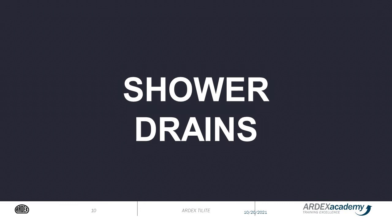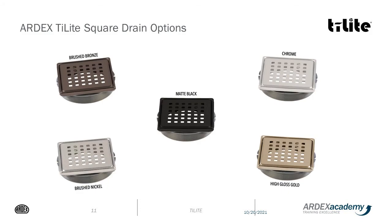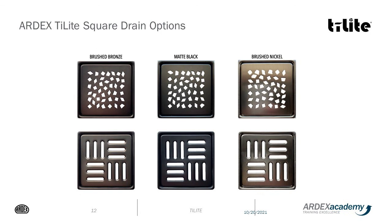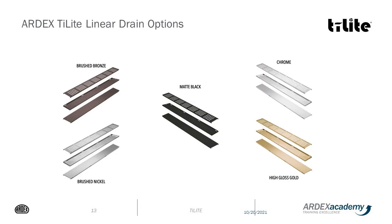TileLite square drains come in matte black, brushed bronze, chrome, high-gloss gold, and brushed nickel. Besides the basic square punch-out option, there are two more design options for the drains. The TileLite linear drains come in the same five finishes but with three different selections: you can have the standard drain grate with punched holes, a tileable grate — which is becoming very popular today — or a standard metal grate cover. Whatever your preference, we can accommodate.